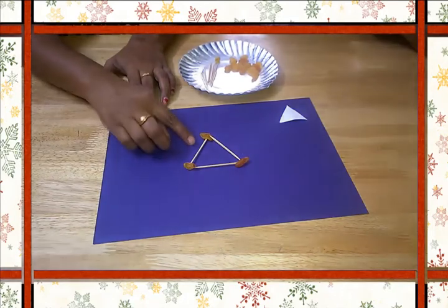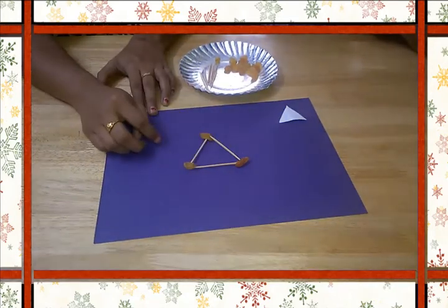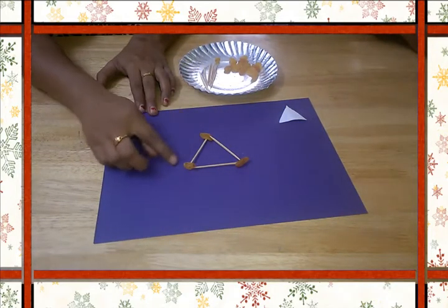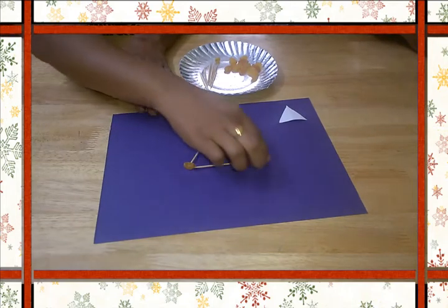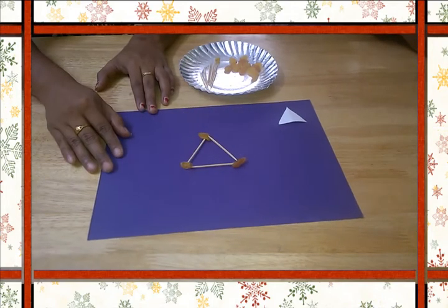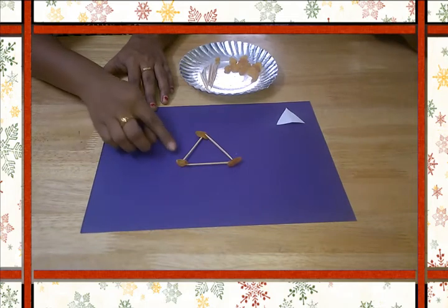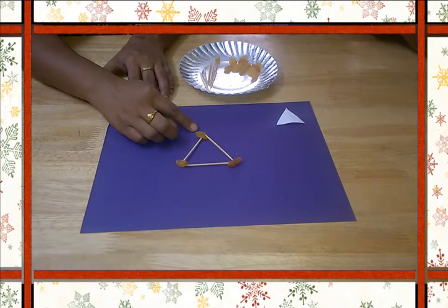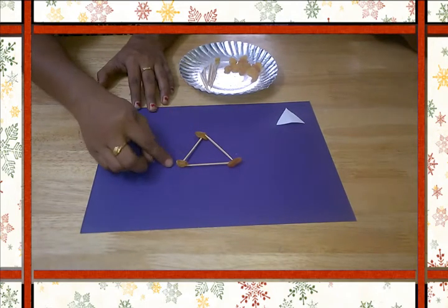Three toothpicks will be used and three raisins to form a triangle which has three corners.